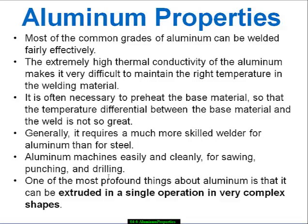Generally it requires a much more skilled welder for aluminum than for steel, and welding is not a common thing you would do for aluminum applications in buildings. Aluminum machines easily and cleanly for sawing, punching, and drilling. It has some tendency under threading to gall, but generally can be done effectively. One of the most profound things about aluminum is that it can be extruded in a single operation into very complex shapes, making it nearly perfect for curtain wall applications where it must be both structural and have fine details to incorporate neoprene gaskets.